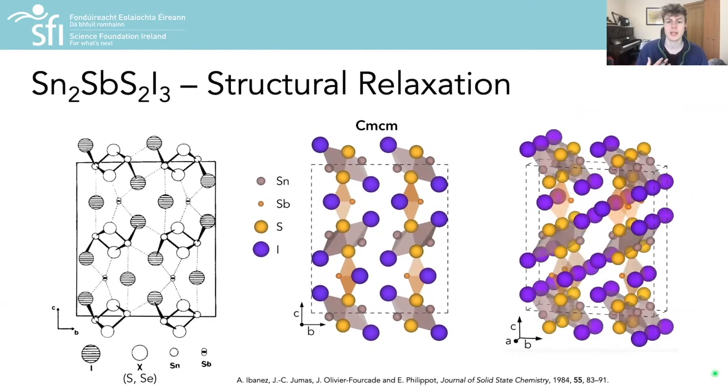So the first step in a theoretical investigation of a material is typically to calculate your optimized crystal structure from which you can then calculate the properties you are interested in, such as the electronic structure and optical absorption. For this we usually turn to databases like the ICSD or the Materials Project for a starting point or initial guess and then relax with an appropriate DFT functional. From some XRD analyses from the 1980s, the crystal structure was determined to have the orthorhombic CMCM space group with these infinite chains of tin, sulfur and iodine along the crystal A direction, with iodine and antimony located between the atomic chains.